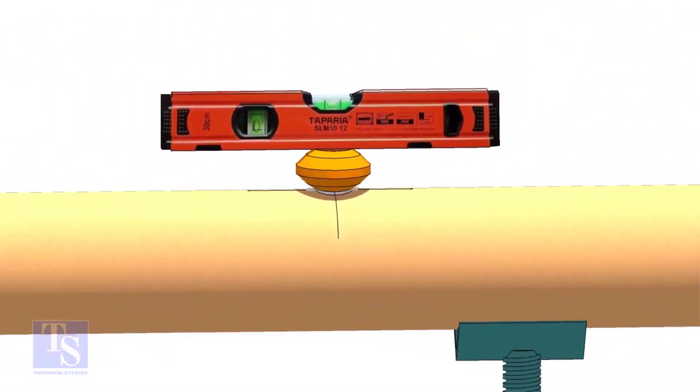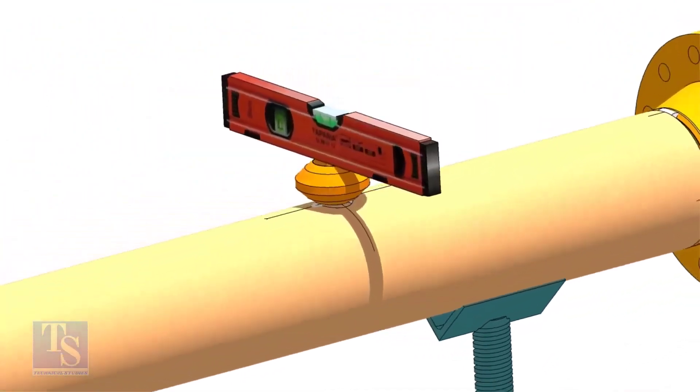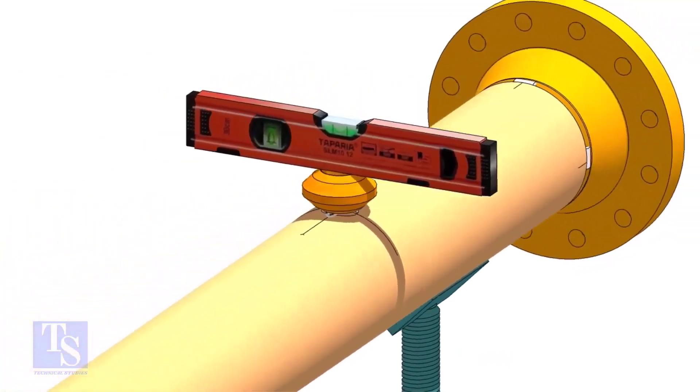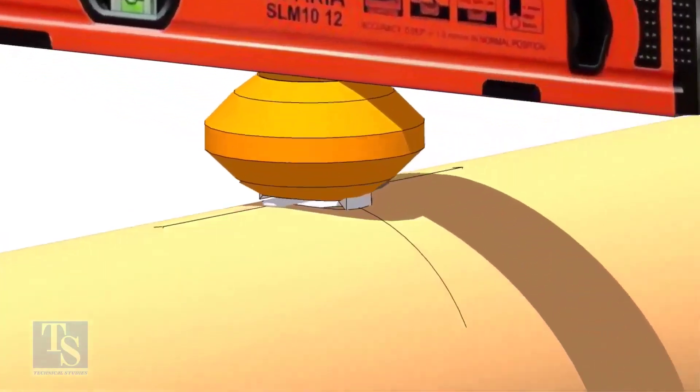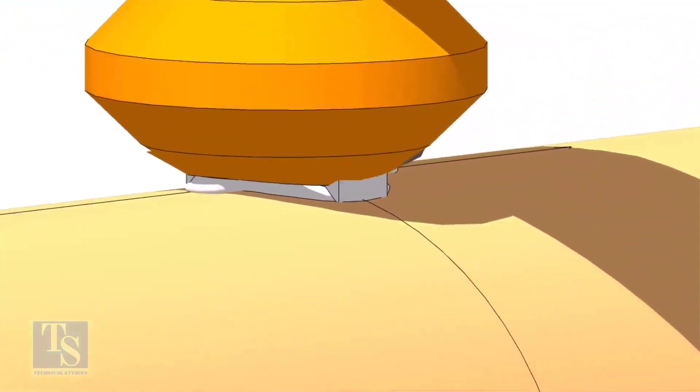Check the level from both sides. Tack weld on the sides of the OLED. Remove the gap rod. Check the level again.